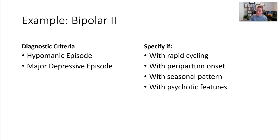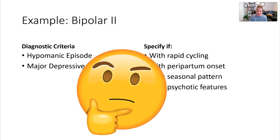You can also specify if there are psychotic features — the DSM further specifies if those psychotic features are mood congruent or incongruent, but broadly that means the presence of delusions or hallucinations. Following a comprehensive assessment by a qualified professional, someone might be diagnosed with Bipolar 2, say, with seasonal pattern as a specifier.